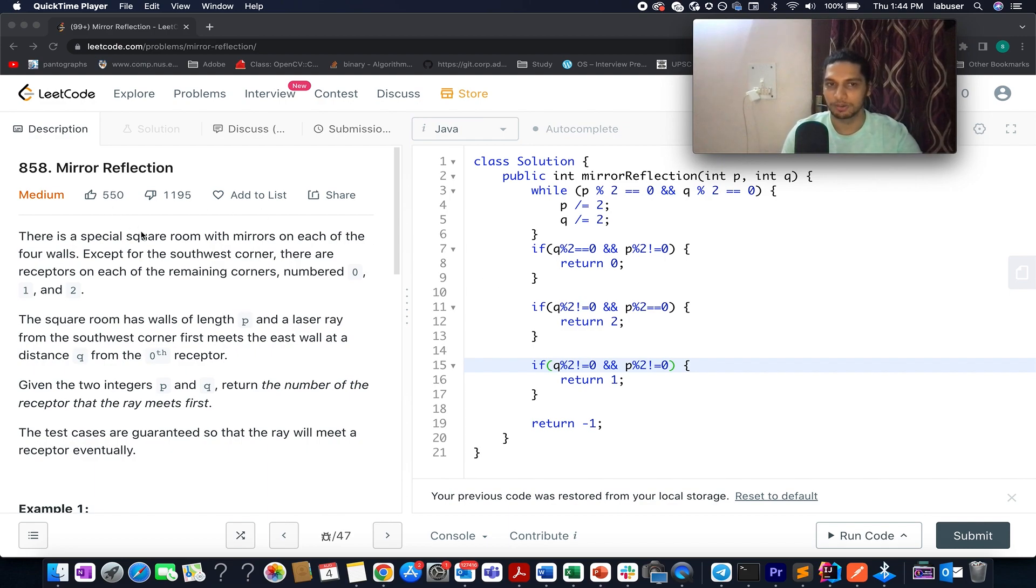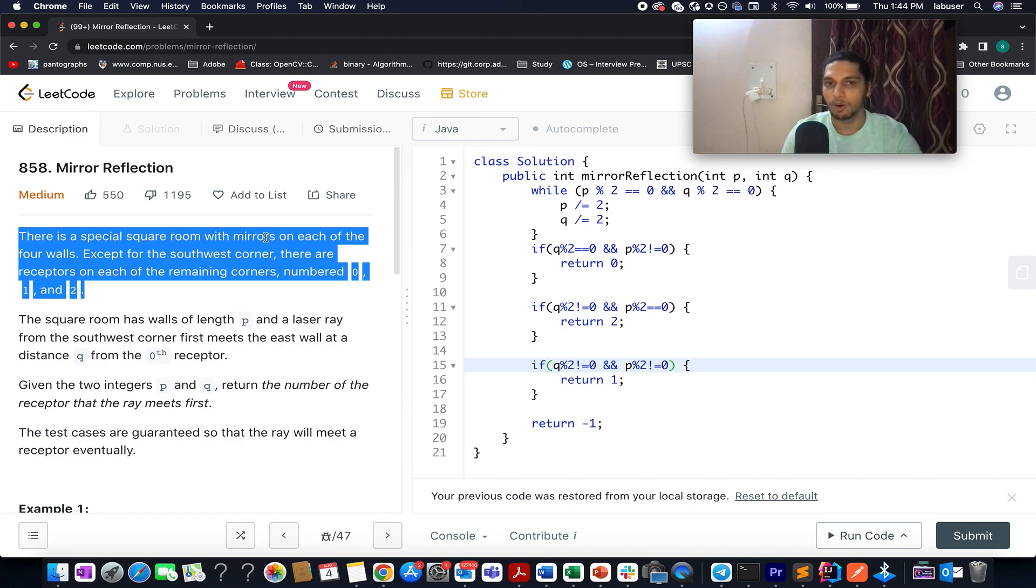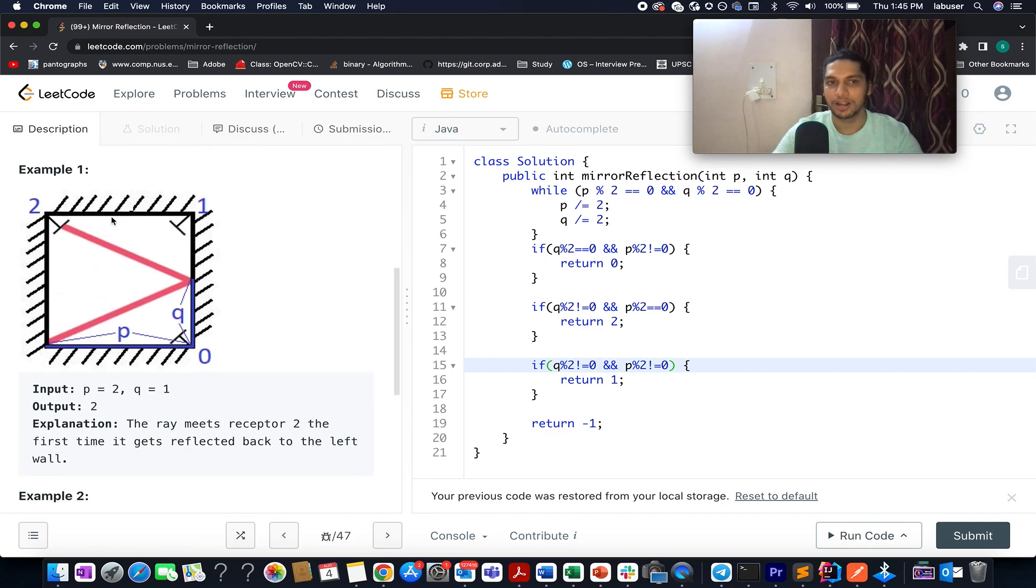Here in this question we are given a square room with mirrors on all the four walls. There are three receptors given in the equation numbered from 0, 1 and 2. If you have a look at this figure then you will see that this is a square room given to us. And all the walls have mirrors on it. There are three receptors stated at 0th position, 1st position and 2nd position. A beam is thrown from this particular end and we are given the distance from the 0th index to which the beam first lands upon. So this is the distance Q and we are also given the side value of the square that we have which is represented by P.